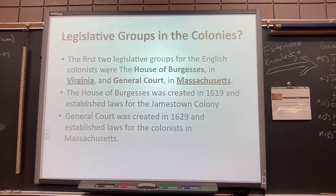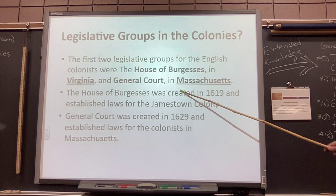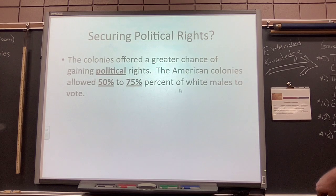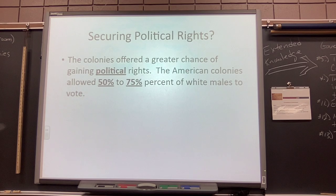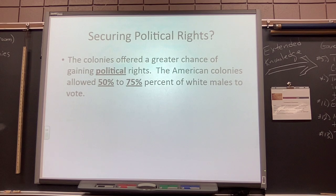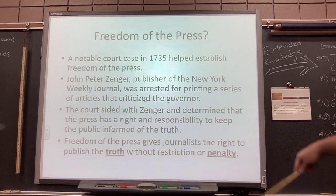The General Court was created in 1629 and established laws for the colonists in Massachusetts. Regarding securing political rights, the American colonies offered a greater chance of gaining political rights. The colonies allowed 50% to 75% of white males to vote. To vote you generally had to be a white male of age — I believe 21 was the age requirement — and you also had to be a property owner.